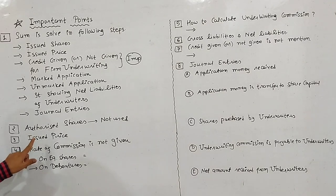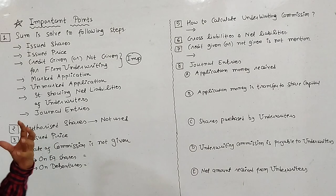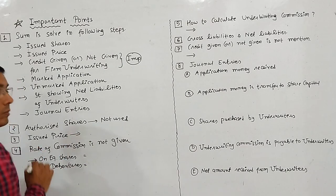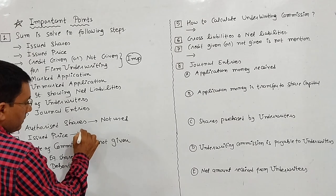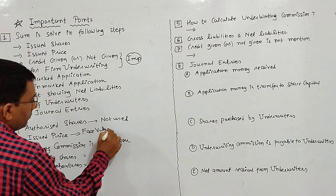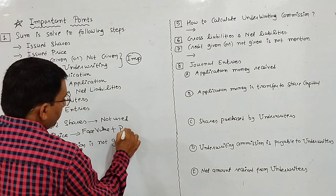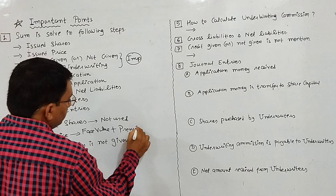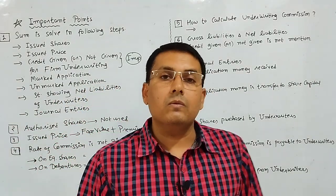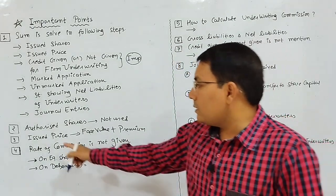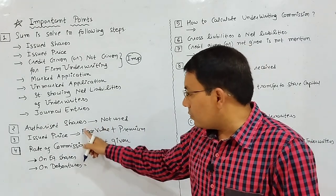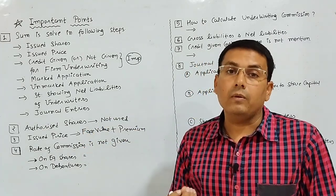Second point — issue price. Issue price is nothing but face value plus premium. If I add premium to the face value, I get the issue price. Face value is the basic, nominal value of the share.